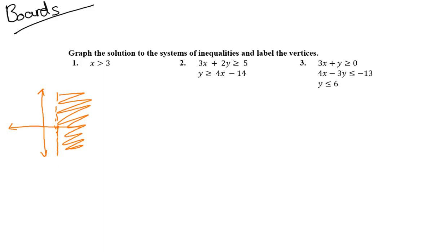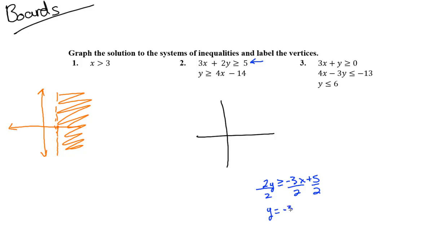Number two: let's use blue and red. The blue inequality is 3x + 2y ≥ 5. Solving for y: subtract 3x, divide by 2, giving y ≥ (-3/2)x + 5/2. Y-intercept is 5/2, slope is -3/2. Since we have an equals sign, it's a solid line. Since y ≥, we shade above. Imagine this entire upper area colored blue.